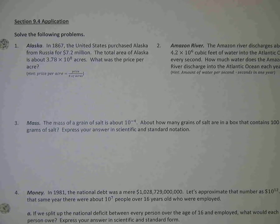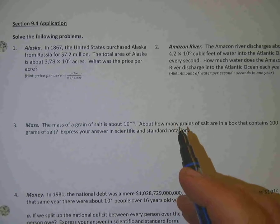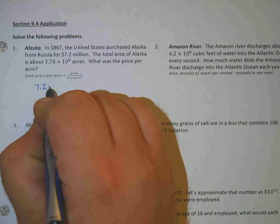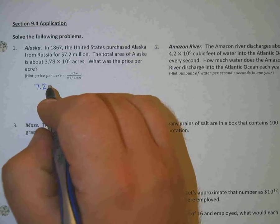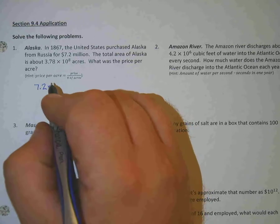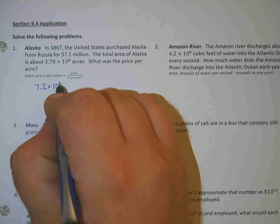So it says in 1867, the United States purchased Alaska from Russia for $7.2 million. I'm going to write $7.2 million in scientific notation. So that would be $7.2 times, so since there's six digits after a million, we have 10 to the 6th power.